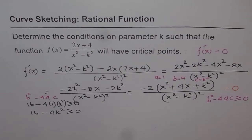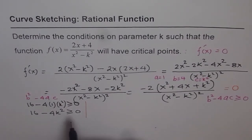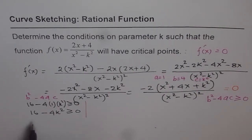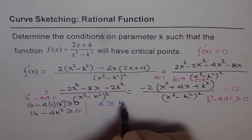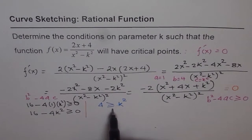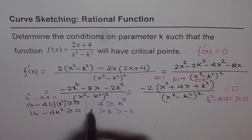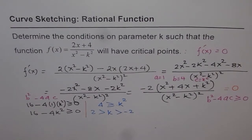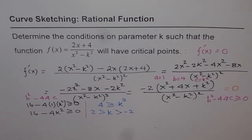Solving the inequality: 16 - 4k² ≥ 0. Dividing by 4, we get 4 ≥ k². Taking minus k² to the other side: k² ≤ 4. That means k is within plus and minus 2 — that is, k² ≤ 4 means the absolute value of k is less than or equal to 2. Taking the square root of both sides: √(k²) = |k|, and this gives |k| ≤ 2.